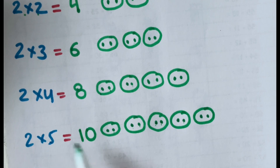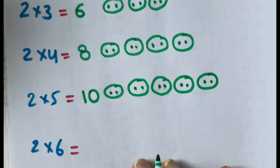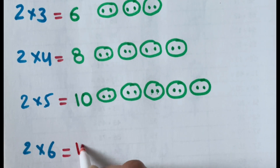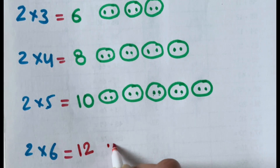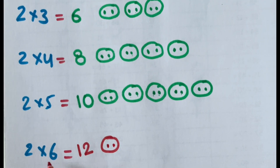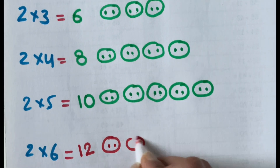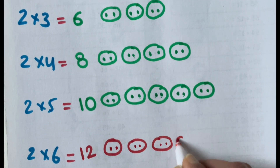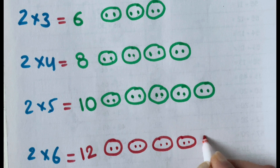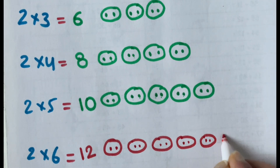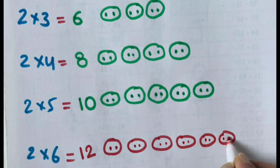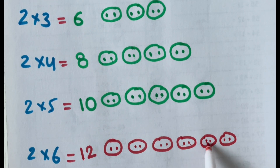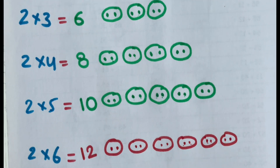So 2 times 5 is 10. Now 2 times 6 — that is 12. 1 group of 2. There will be 6 groups of 2. 2, 3, 4, 5, 6, 7, 8, 9, 10, 11 and 12.